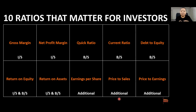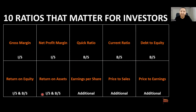Here's a quick summary of the ratios. We have two income statement ratios — you only need the income statement. Then we have three balance sheet ratios: the quick ratio, the current ratio, and the debt-to-equity ratio. The bottom row contains combination ratios — return on equity and return on assets — which combine numbers from both statements. Then we have three additional ratios: earnings per share needs the number of shares, while price-to-sales and price-to-earnings need the market cap of the company.